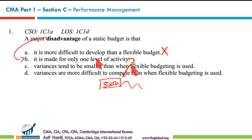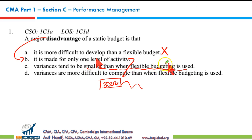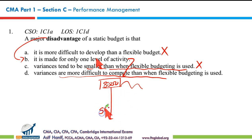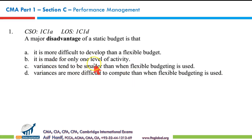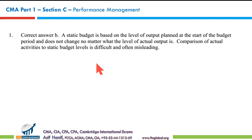Why not C or D? Option C: variances tend to be smaller than when a flexible budget is used — incorrect, because variances can be more or less with either budget type. Option D: variances are more difficult to compute than when a flexible budget is used — also wrong, because with a static budget you simply compare it with actual results. Difficulty arises when you flex the budget and then compare flex budget versus actual. The correct option is B: a static budget is made for only one level of activity.